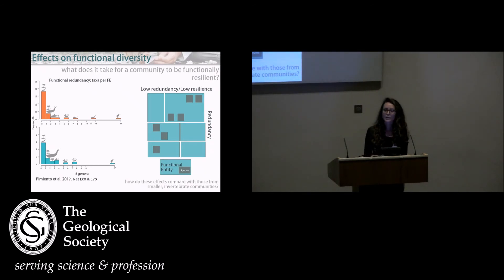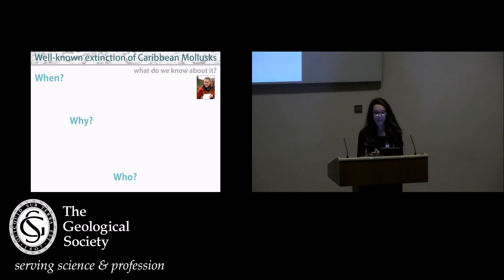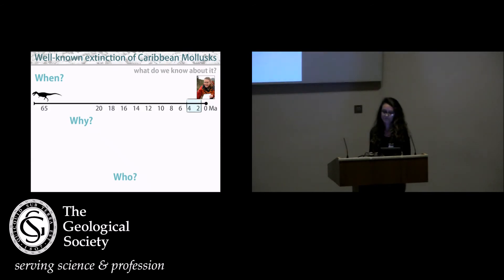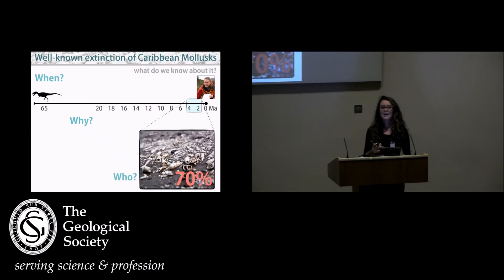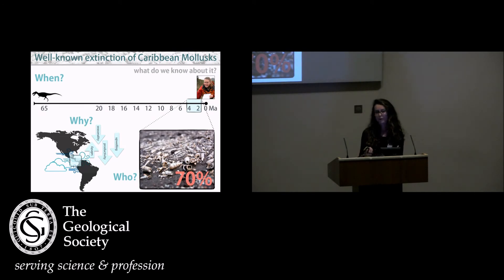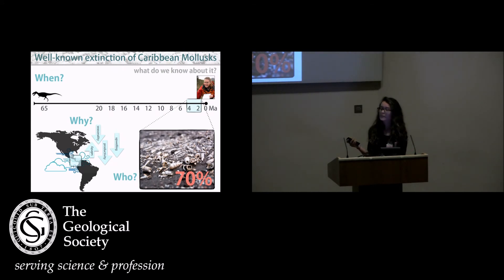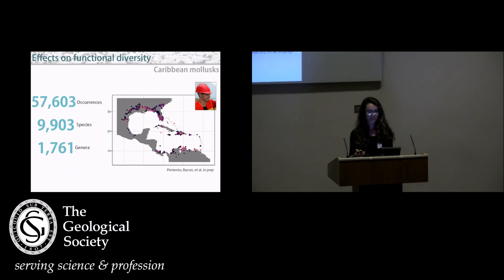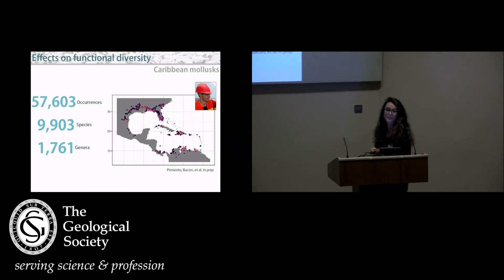We also wanted to compare this with what's occurring in the Caribbean — a study led by Christine Bacon and Austin Hendy. A mass extinction event in the Plio-Pleistocene affected 70% of benthic communities, thought to have occurred because once the Isthmus of Panama formed, currents, climate, and oceanographic conditions changed. Austin Hendy collected a huge dataset from his own fieldwork, museums, and the literature, and we ran the same PyRate analysis.